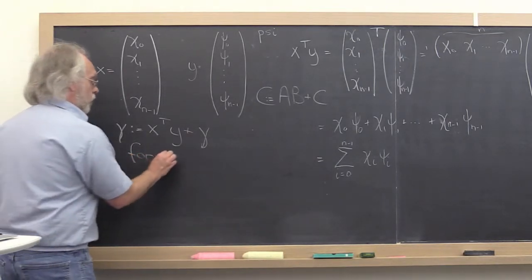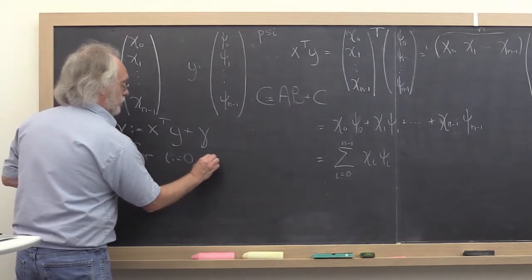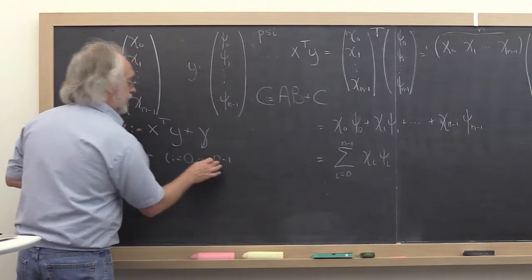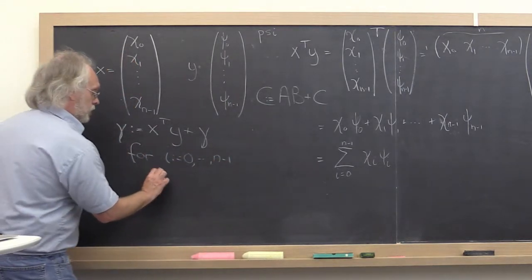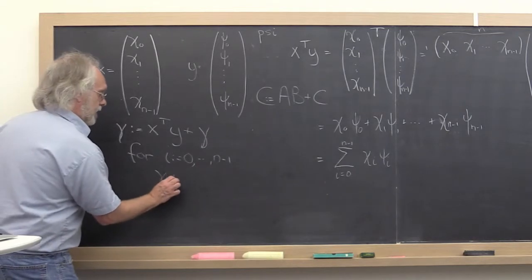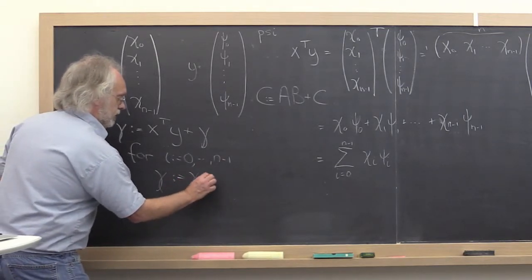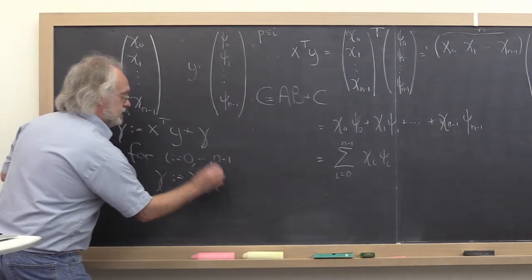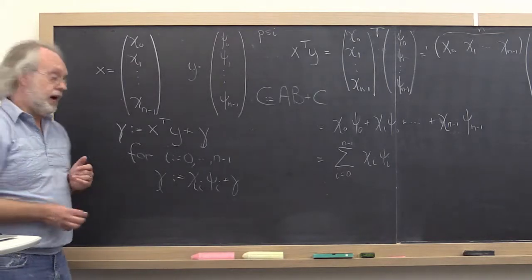Well, we want to do for i is equal to 0 through n minus 1, where n is the size of the vectors. And then all we do is we update gamma by multiplying the corresponding entries of x and y together, adding those to what's already in gamma.